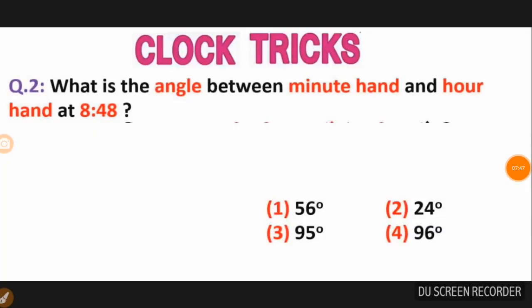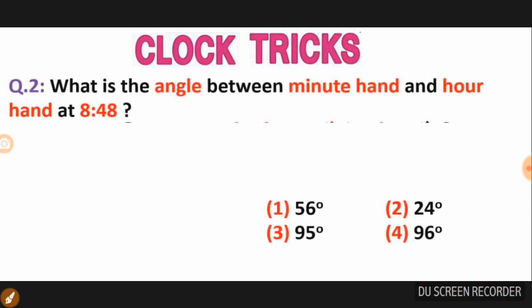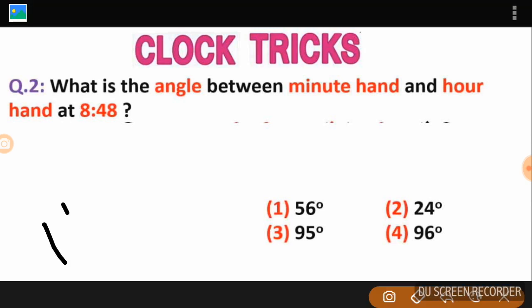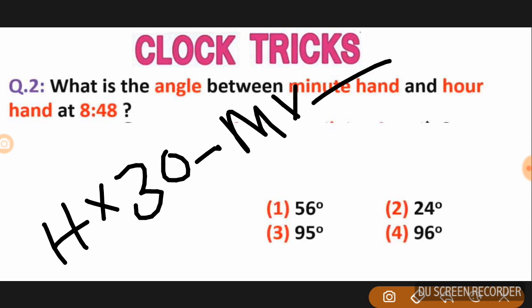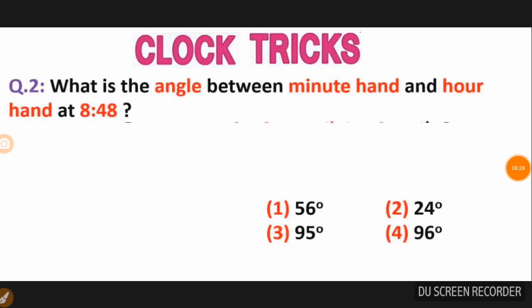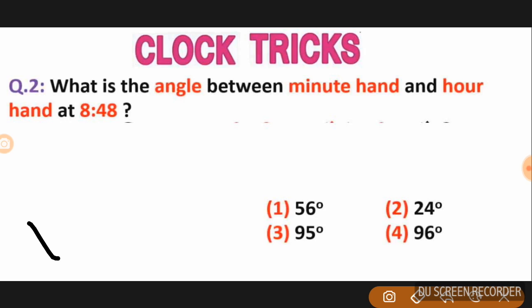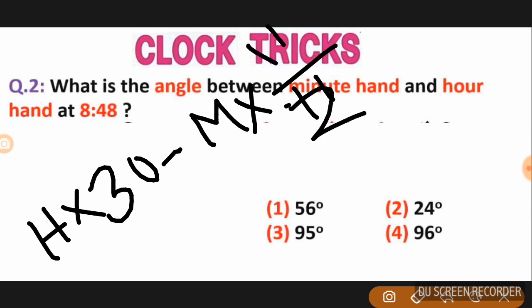Next question: What is the angle between minute and hour hand at 8:48? Whether it's AM or PM doesn't matter for angle calculation. The traditional method formula is: hour hand into 30 minus minute into 11 by 2.